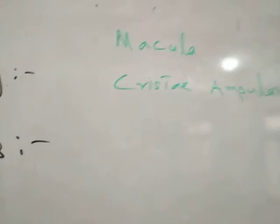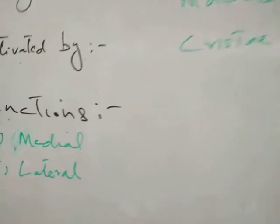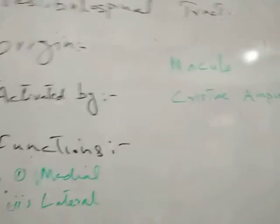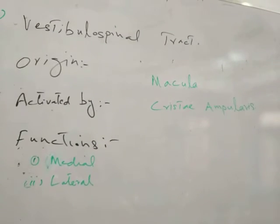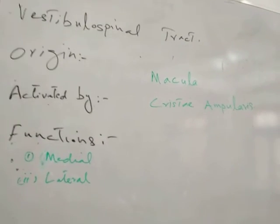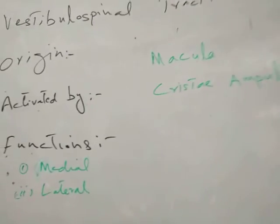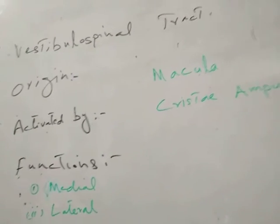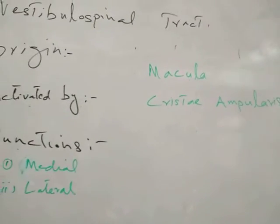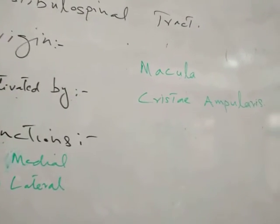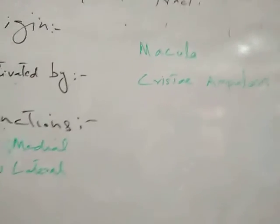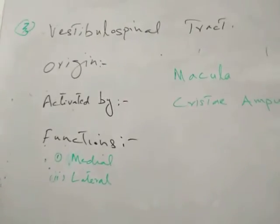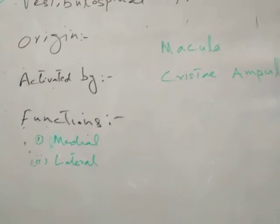جب Macula اور Crista Ampullaris vestibulonuclear complex کو activate کرتے ہیں تو وہ message بھیجتا ہے Vestibulospinal Tract کو۔ Macula اور Crista Ampullaris انر ایئر میں ہیں۔ اس complex کی activation دو جگوں سے ہوتی ہے: ایک inner ear سے، دوسری cerebellum سے، کیونکہ cerebellum کو latest information معلوم ہوتی ہے۔